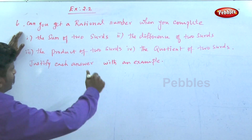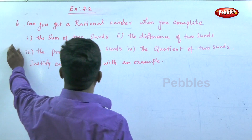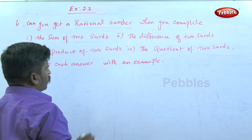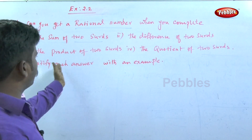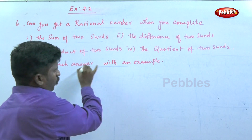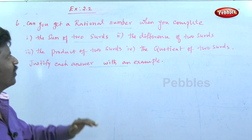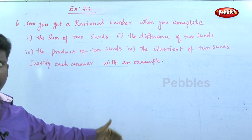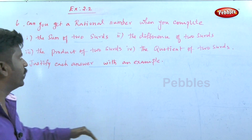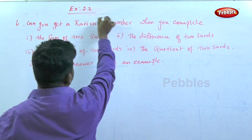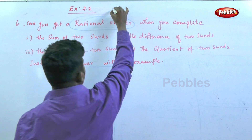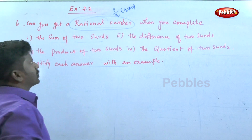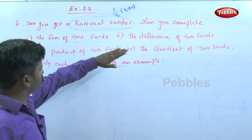The sixth question: can you get a rational number when you compute the sum, difference, product, and quotient of two surds? Justify each answer with an example. What is a rational number? A rational number is of the form p/q where q is not equal to zero.